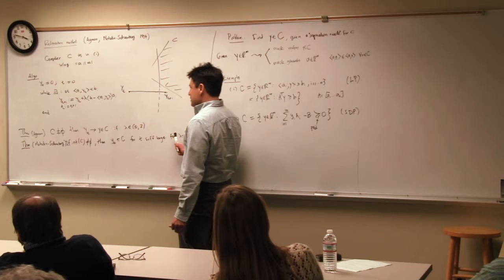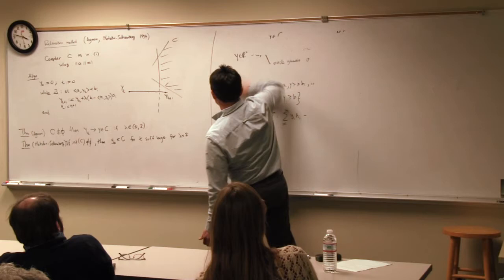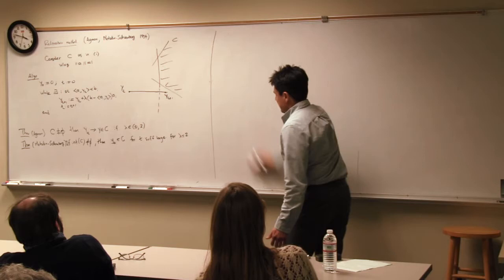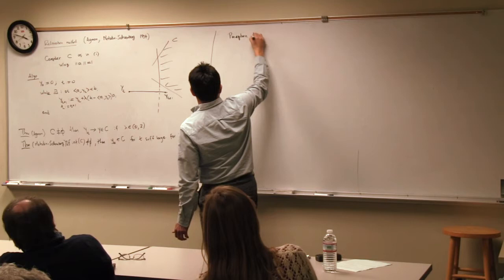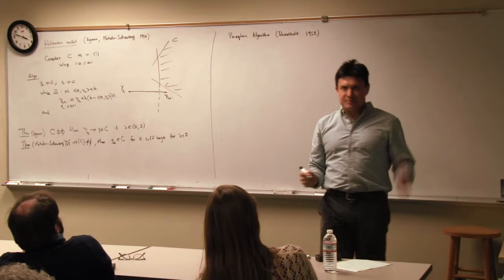Another development from the 1950s, by someone here at Cornell at the time, was the perceptron algorithm. This was by Rosenblatt in 1958, working at what was called the Cornell Aeronautical Laboratory.